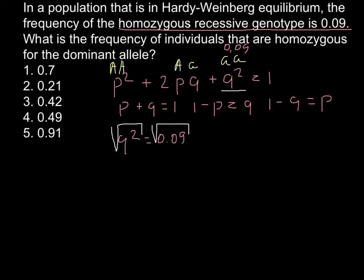If Q squared equals to 0.09, Q would be 0.3. And this also stands for homozygous recessive, and this is going to be just frequency of the recessive allele.